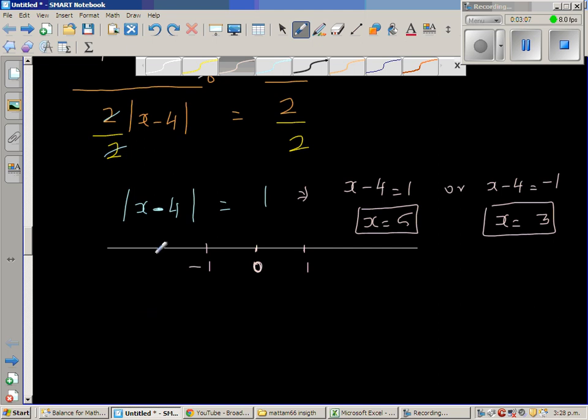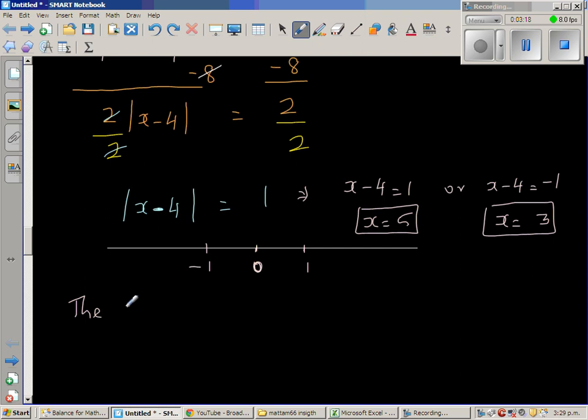You can also think this in a different way, like this. x minus 4 is equal to 1. So when you say x minus 4, I can say this means the distance of x from 4 is 1.